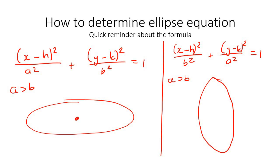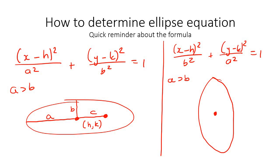Now, this is just a summary before we get into the actual lesson. The center is always h and k. This length along the major axis is a, and this length is b. Then we found something else called a foci, which is the length c — there are two of them. For the vertical case, the center is h and k, the longer length is a, b is the shorter one, and c is the foci distance.